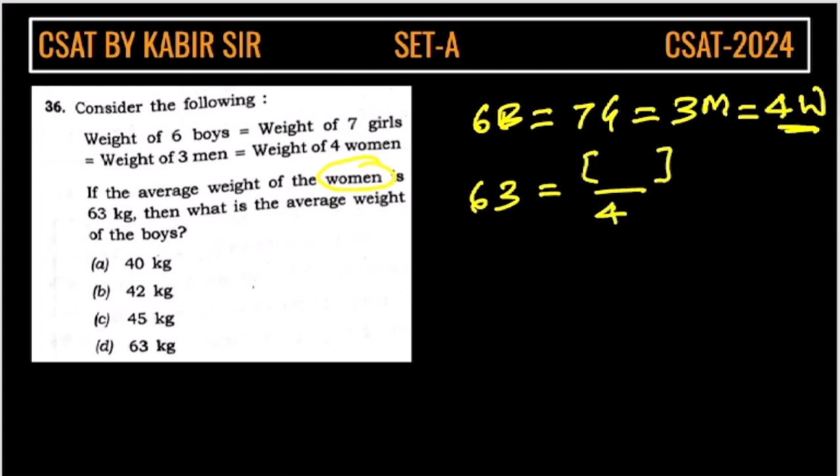So total weight of women will be, here 4 women will be, so total weight of women is 63 into 4.